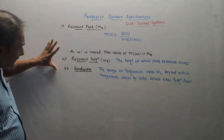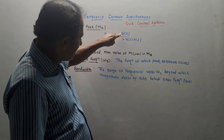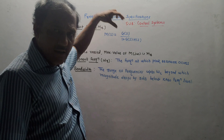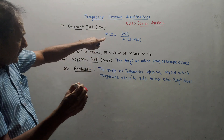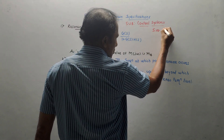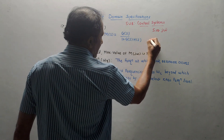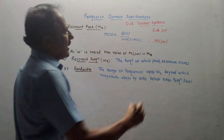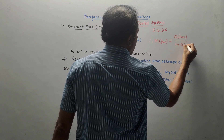I have written three important specifications. First is resonant peak. We know that the transfer function of a system is given by G(s) upon 1 plus G(s) into H(s). G(s) is the transfer function of the forward block, H(s) is the feedback block. To obtain the transfer function in the frequency domain, the simple trick is to replace s by jω. This equation can be written as M(jω), which equals G(jω) upon 1 plus G(jω) into H(jω).